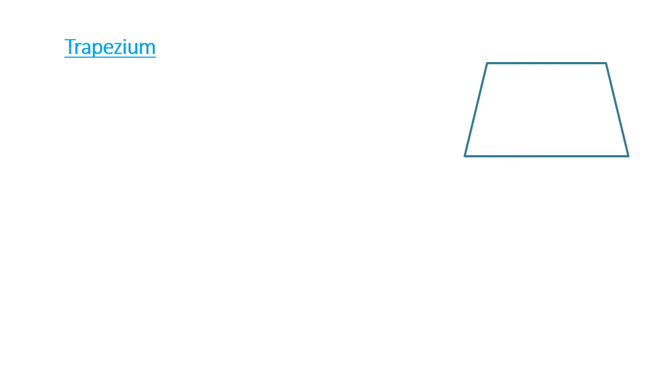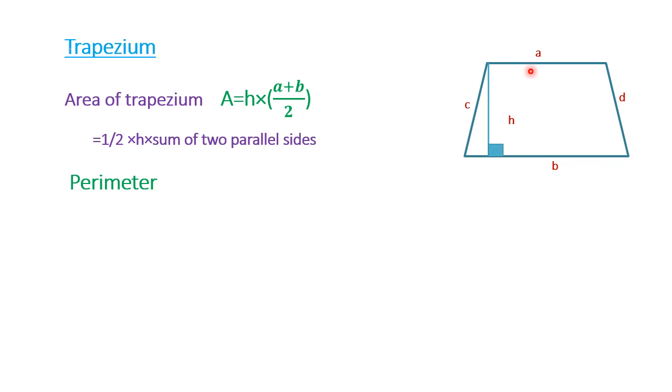Trapezium. Area of trapezium A equals H times quantity A plus B by 2, or half times H times the sum of the two parallel sides. Perimeter of trapezium P equals A plus B plus C plus D.